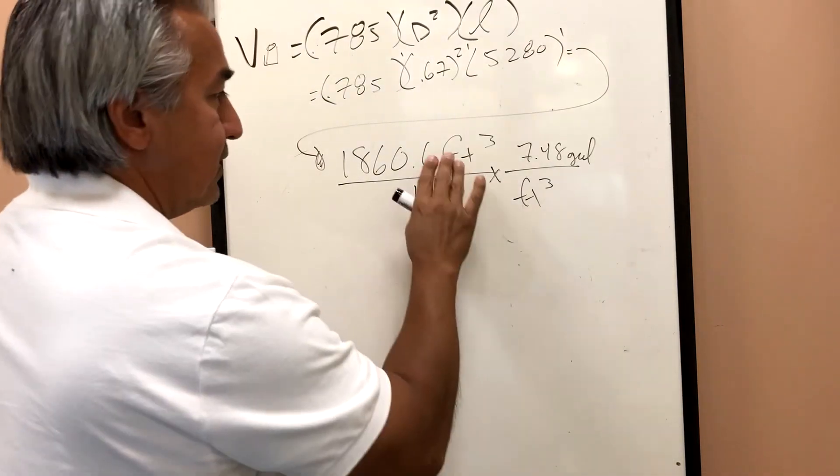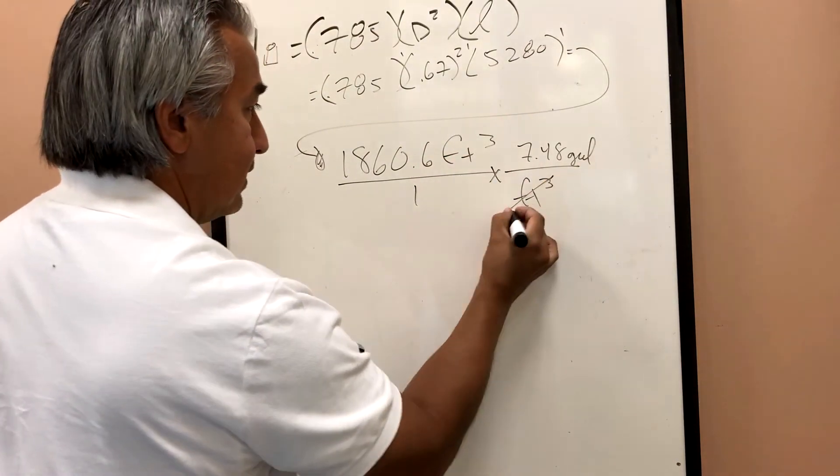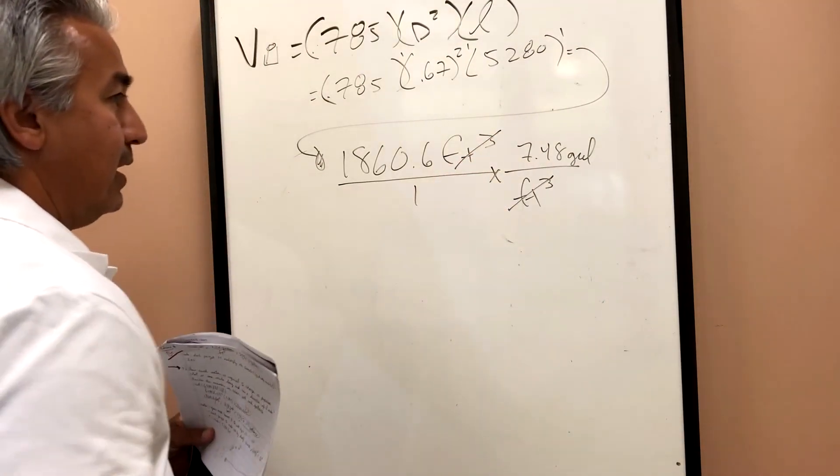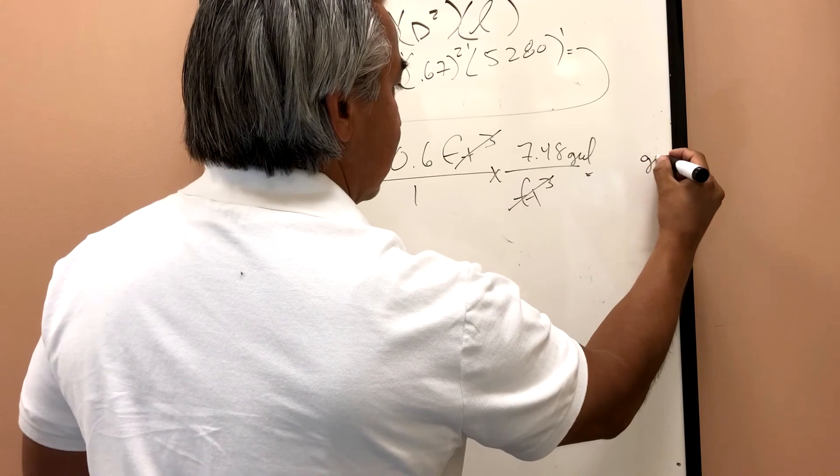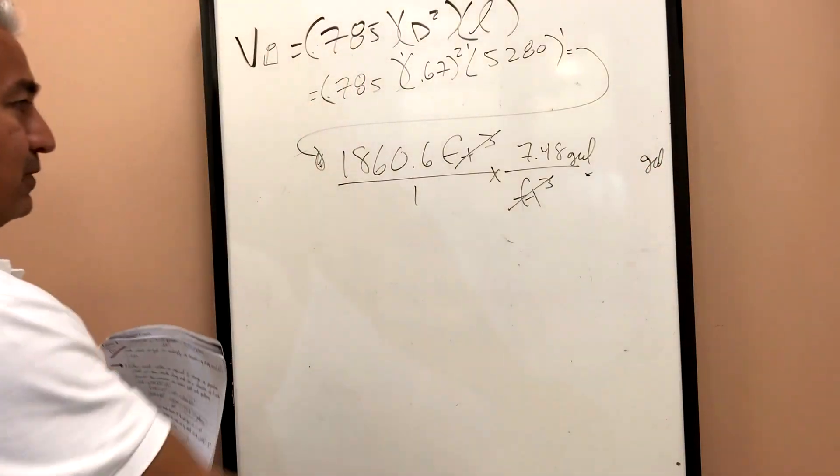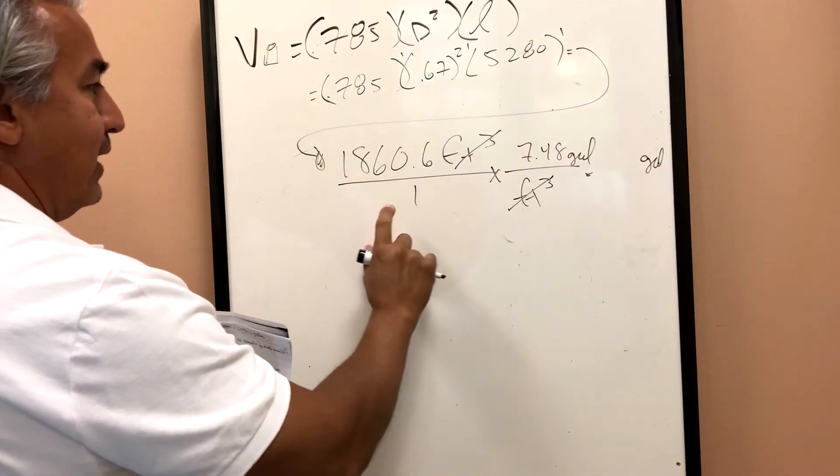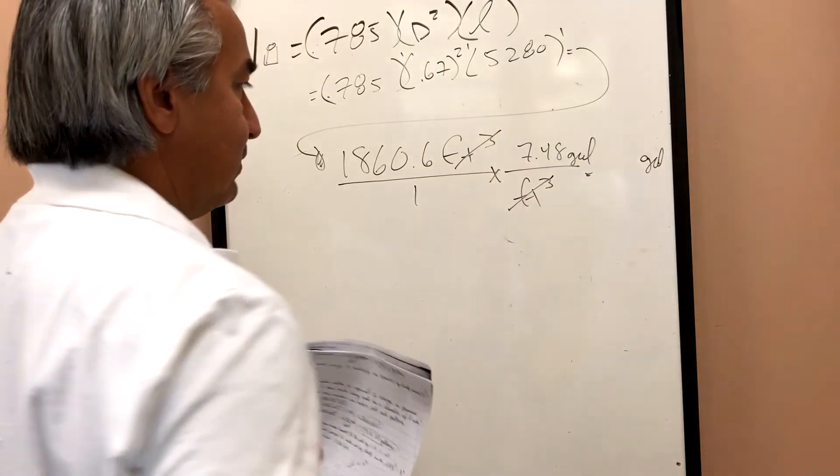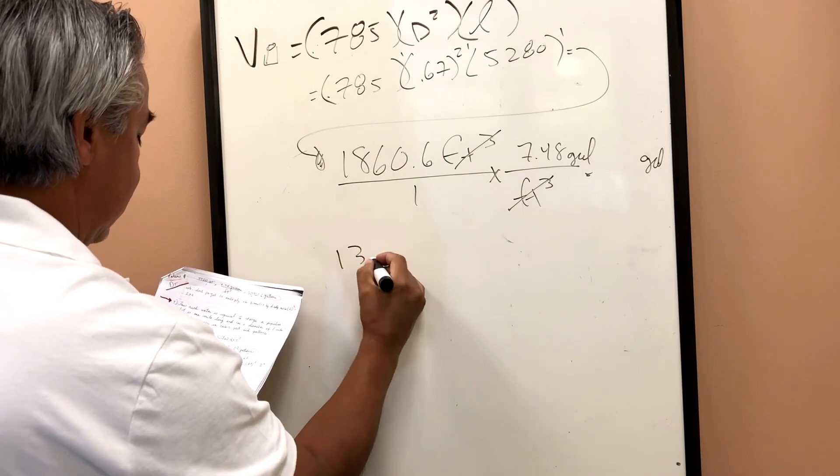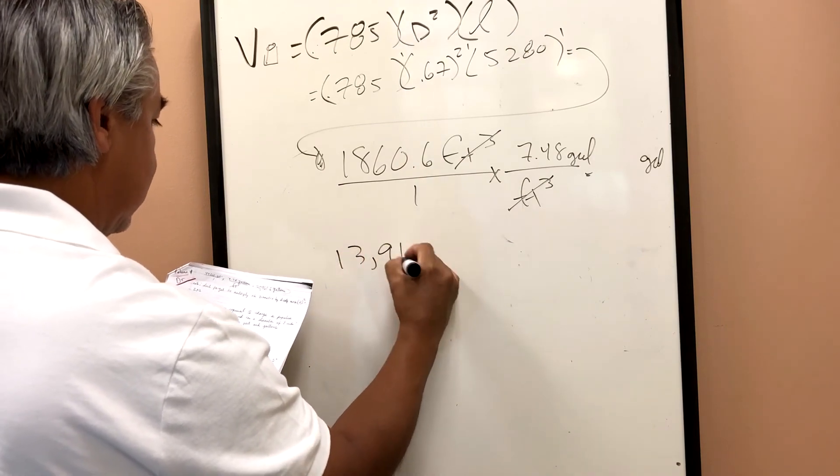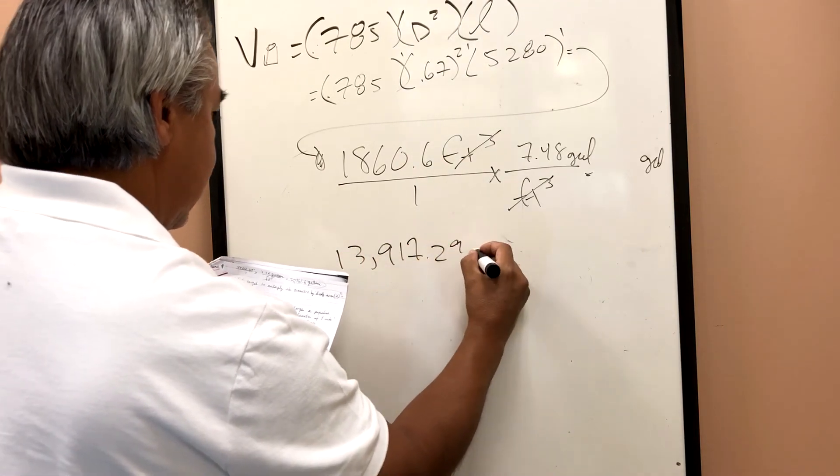And so you can see that these cubic feet are going to cancel out very nicely. And I'm left with gallons as a unit of measure. And all I have to do is multiply 1860.6 times 7.48. And that gives me 13,917.29 gallons.